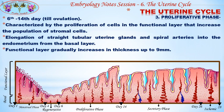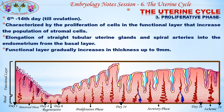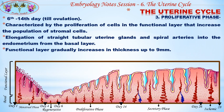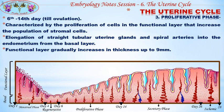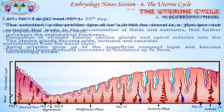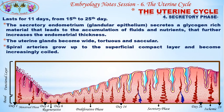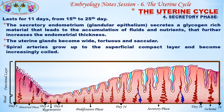The third is the proliferative phase, from the sixth to fourteenth day. It is characterized by the proliferation of cells in the functional layer, increasing the population of stromal cells, and by the elongation of straight tubular uterine glands and spiral arteries into the endometrium from the basal layer. The functional layer gradually increases in thickness up to nine millimeters.